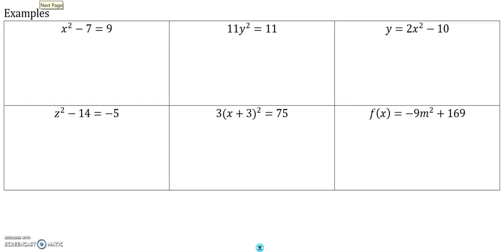Let's take a look at our first example. Again, we want our equation to be in the form of ax² + c = 0. Okay, so we don't quite have that.